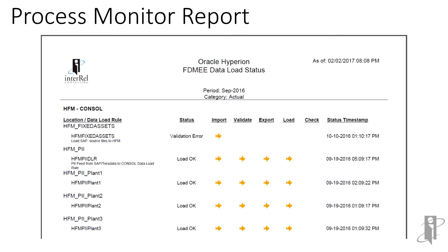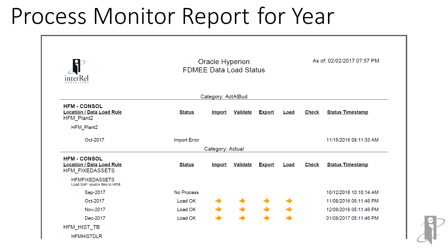The process monitor report does not usually have a logo, and it's not often grouped in the same manner. This is an example where a custom grouping of the process monitor report starts at the application type, then the location, and the load rules within that location, and then of course our corporate logo. Here's an example of a process monitor report for the year where we can see multiple periods within a data load rule.